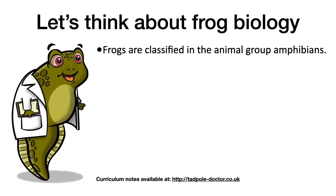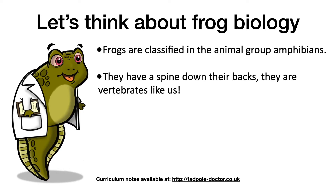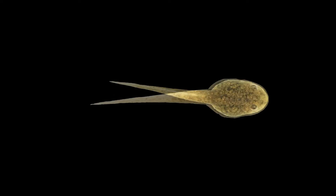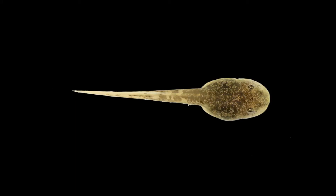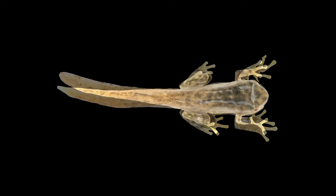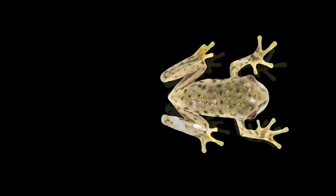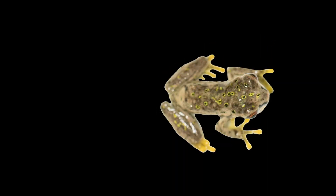Let's think about frog biology. Frogs are classified in the animal group amphibians. They have a spine down their backs — they are vertebrates, like us. Humans are classified as mammals. Frogs have a very different life cycle and mode of reproduction compared to mammals. Frogs lay their eggs externally. The egg then develops into a tadpole that can swim around and feed in the water. As they feed, they get bigger and develop arms and legs. This is called a froglet. The froglet then loses its tail to become an adult frog that can leave the water, breathe air, and find new places to feed and lay eggs. We call this developmental process metamorphosis.